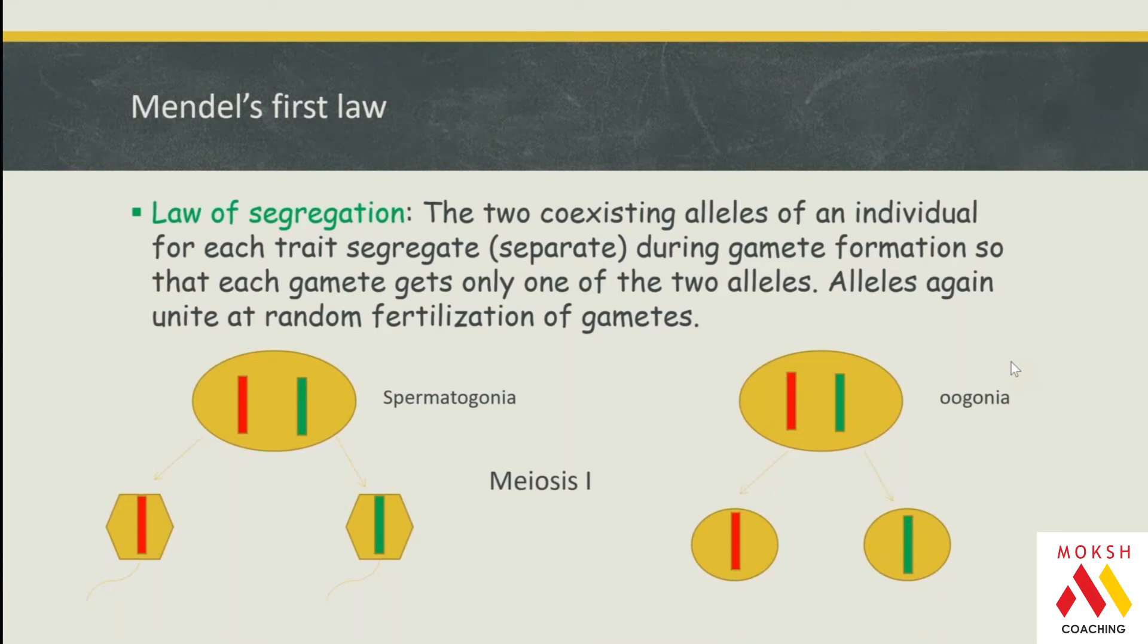Alleles again unite at random following fertilization. You can see here: spermatogonia has allele one in red, allele two in green; oogonia as well has allele one in red, allele two in green. They are segregated in the sperms and ova. When they fuse, it's going to be two haplotypes coming closest to form the genotype, and then formation of the zygote.